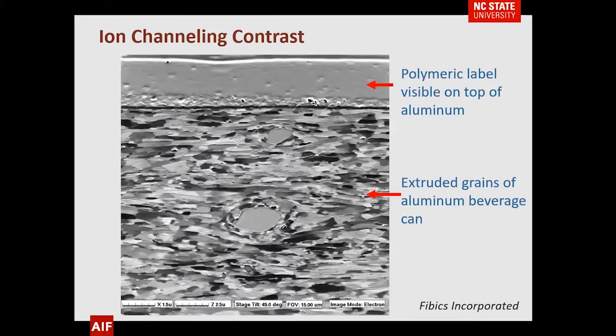Here's another example. FEI is a company that has a lot of well-done figures on their website and is a place you may look. This is an aluminum can — a beverage you would like to have. You can see that the grains are not circular; they're stressed and stretched out because they're extruded during the manufacturing of the container.